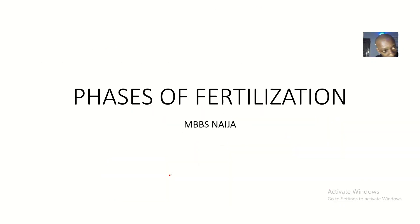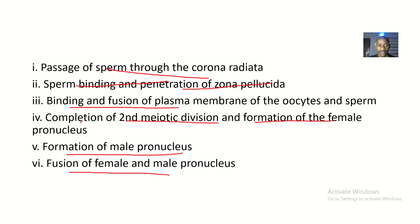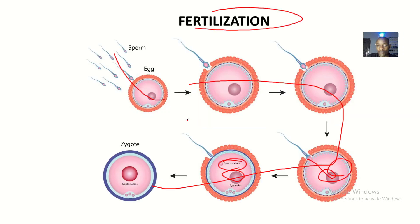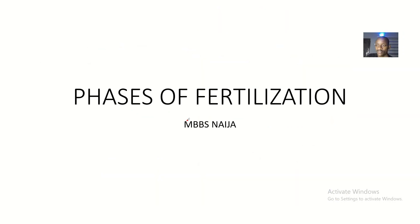So that's it about the phases of fertilization — phase one through phase five. Sometimes phases three and four are combined into one phase, so what would be phase five becomes phase four, and so on. This is because binding and fusion of the plasma membrane and the resumption and completion of the second meiotic division and formation of the female pronucleus are essentially one event. So guys, this is it about the phases of fertilization.